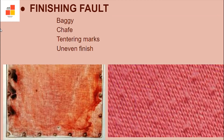Next is finishing fault. We start with baggy — fabric which does not lie flat on the cutting table. Chafe is an area where fabric is damaged by friction. Tentering marks are areas along the edge of fabric that are not even, also called pin marks.